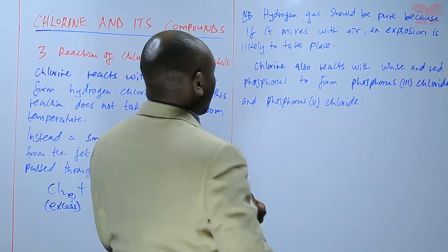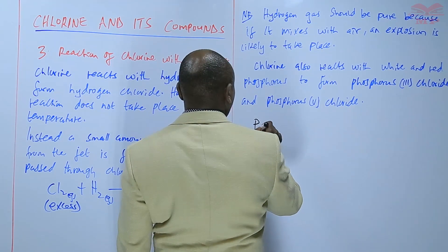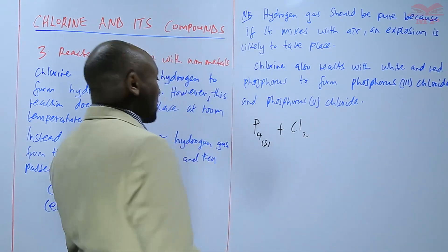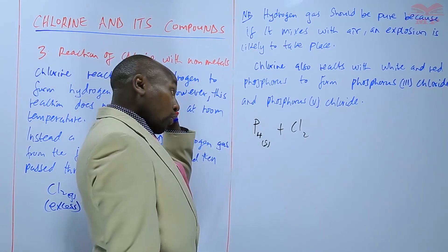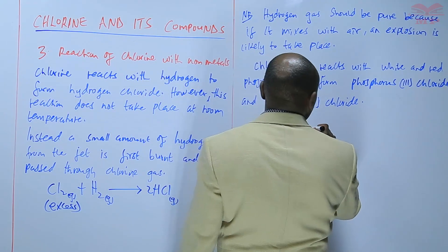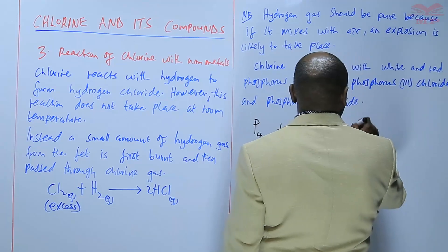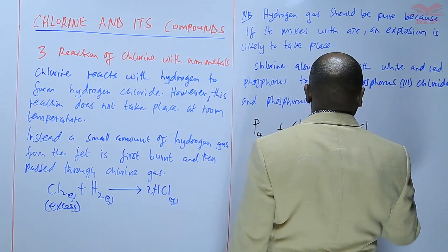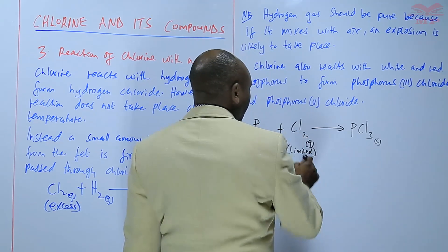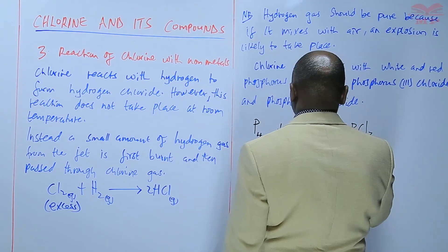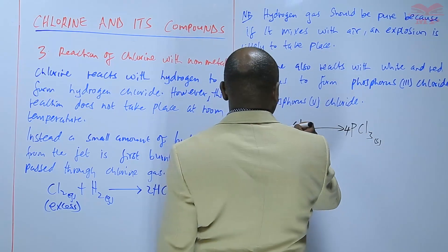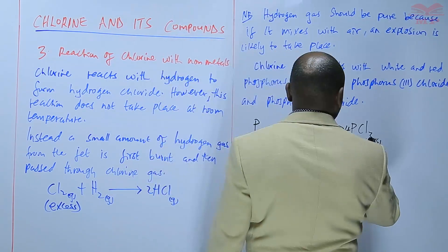So we have phosphorus plus chlorine — phosphorus exists as a molecule made of four atoms, a P4 molecule — so P4 plus chlorine will form phosphorus trichloride (PCl3), and that is if chlorine is limited in supply.